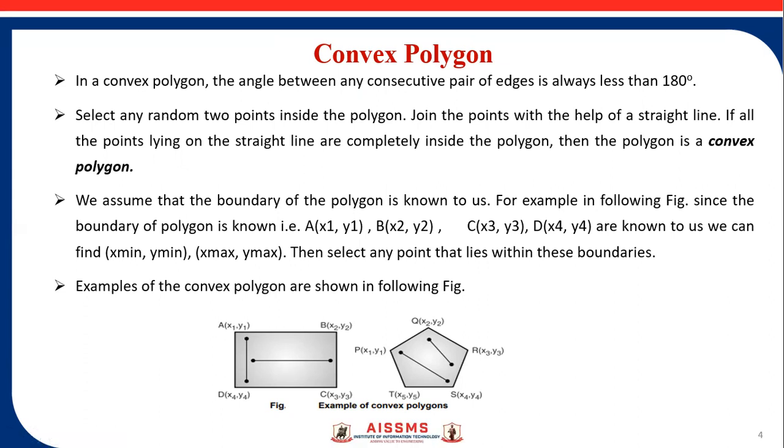We can assume that the boundary of the polygon is known to us. For example in this figure, the boundary points A of x1 y1, B of x2 y2, C of x3 y3, D of x4 y4. We can find x minimum, y minimum and x max, y max, then select any point that lies within this boundary. Examples of such convex polygons are shown in this diagram.